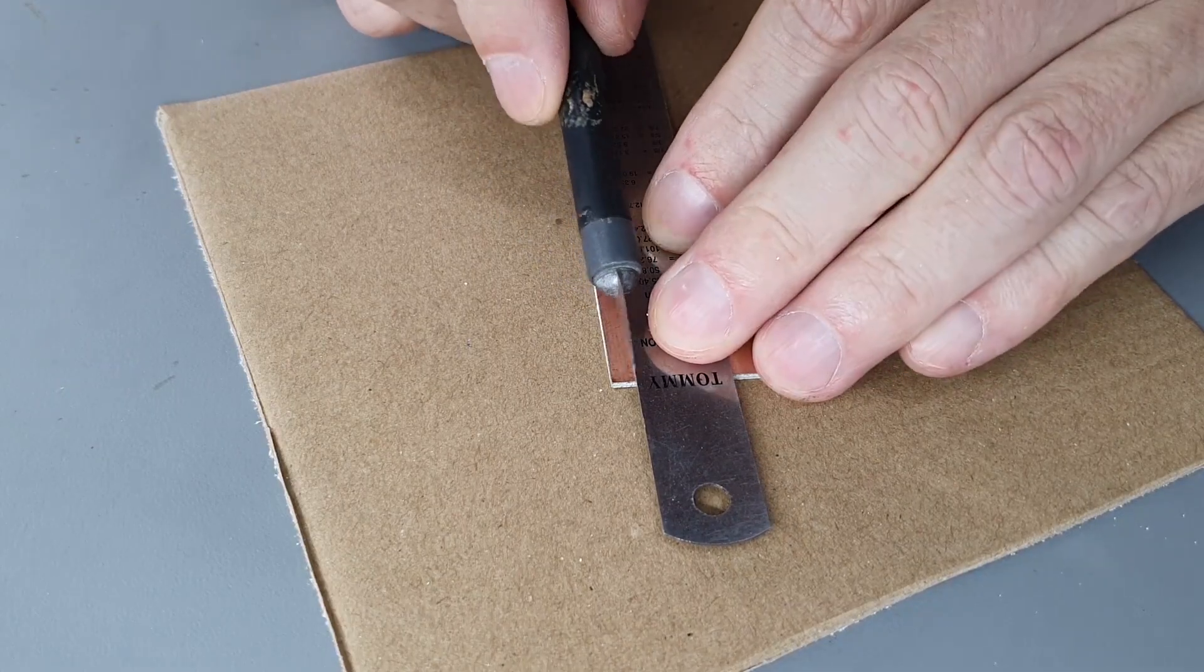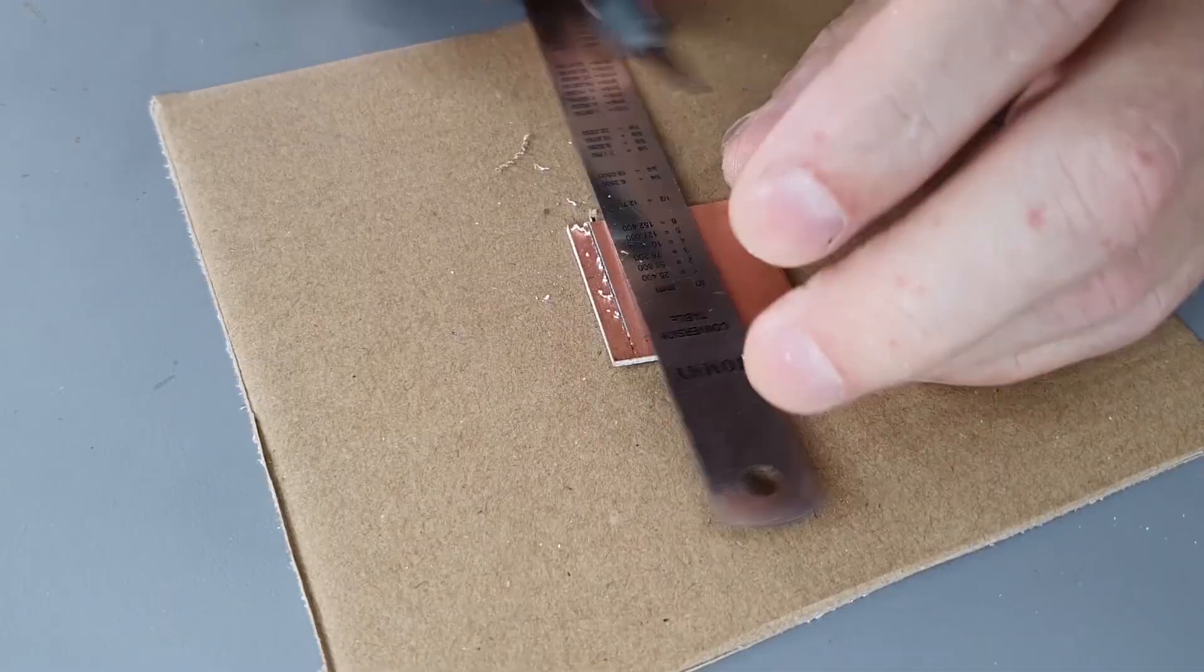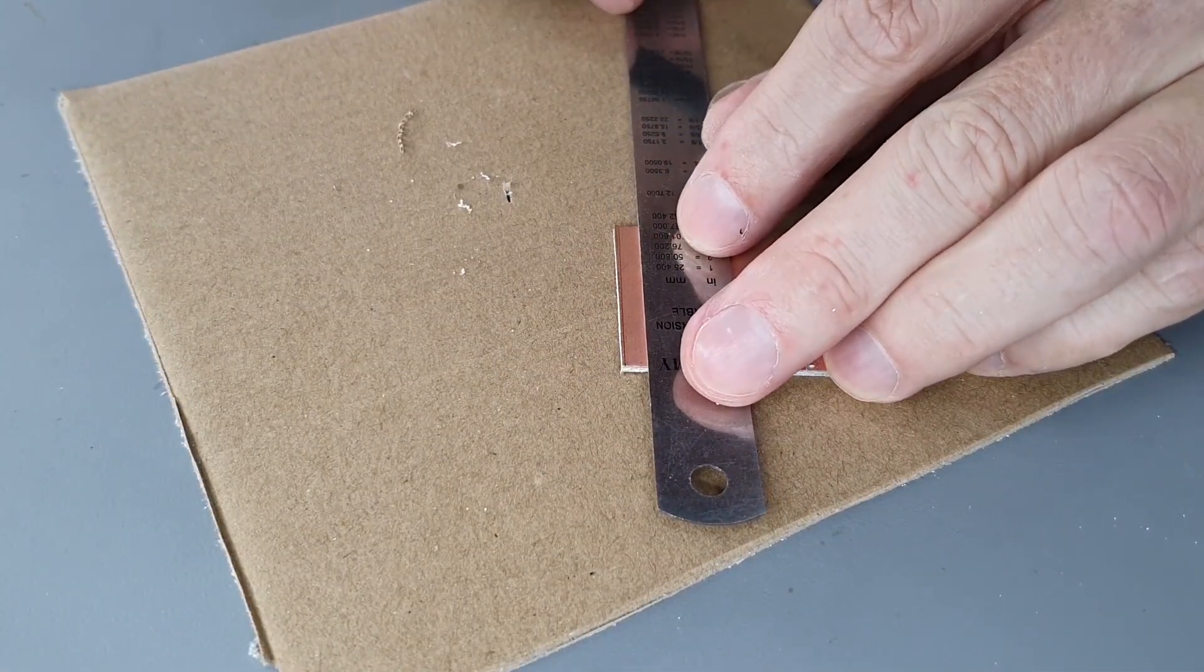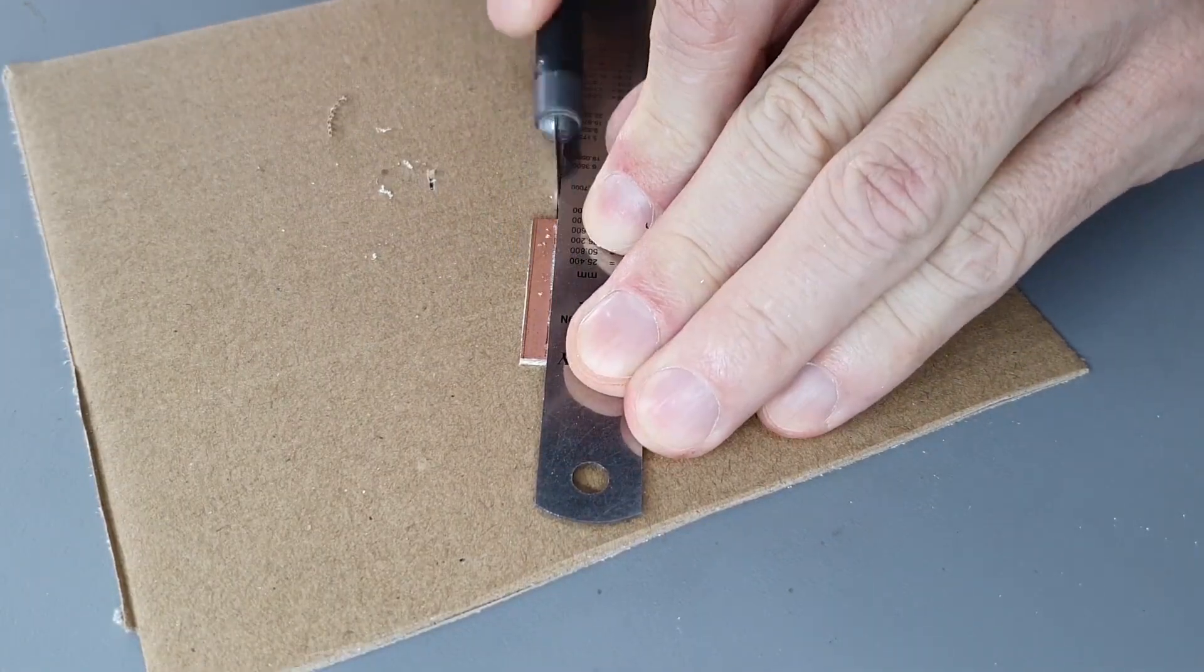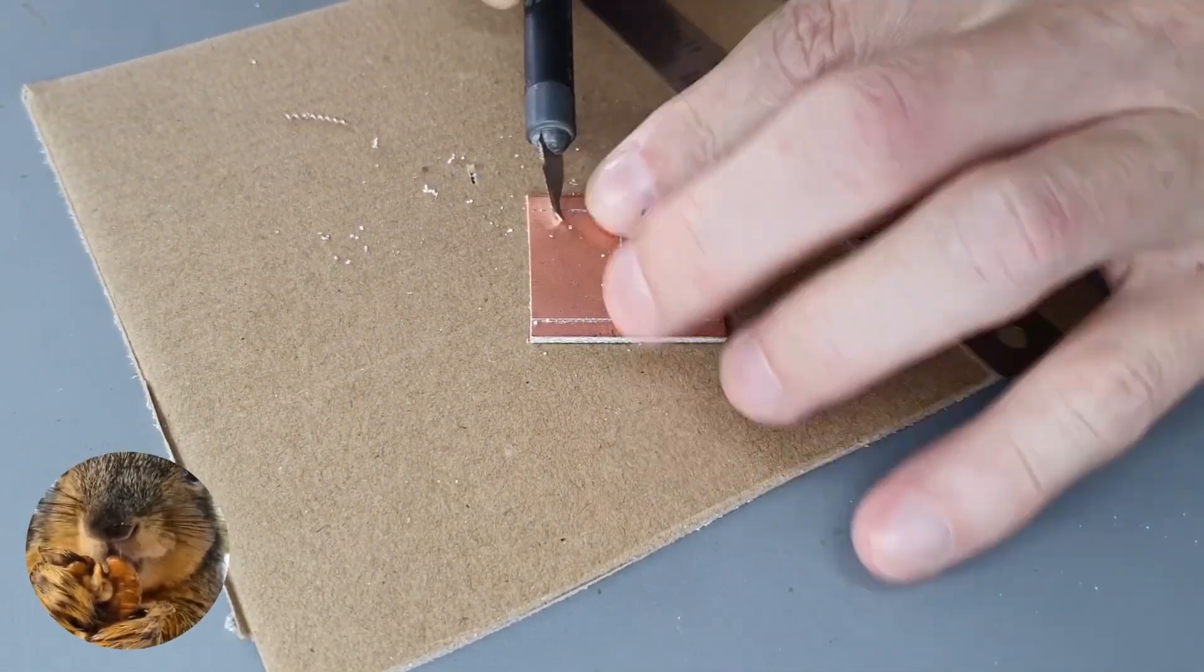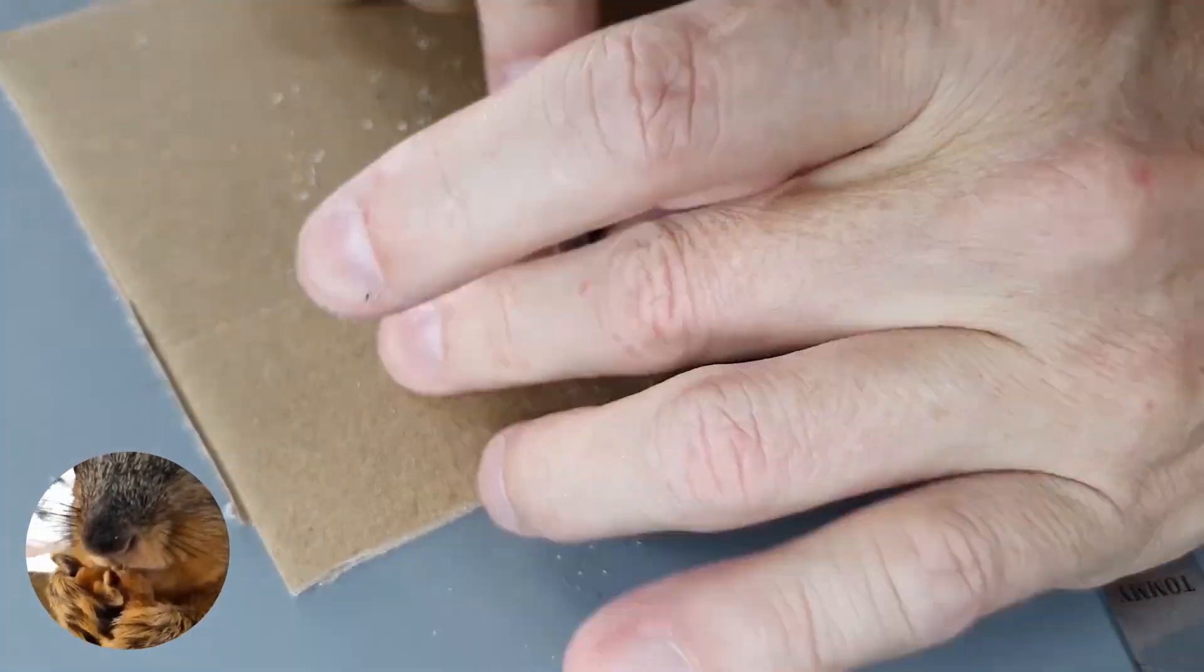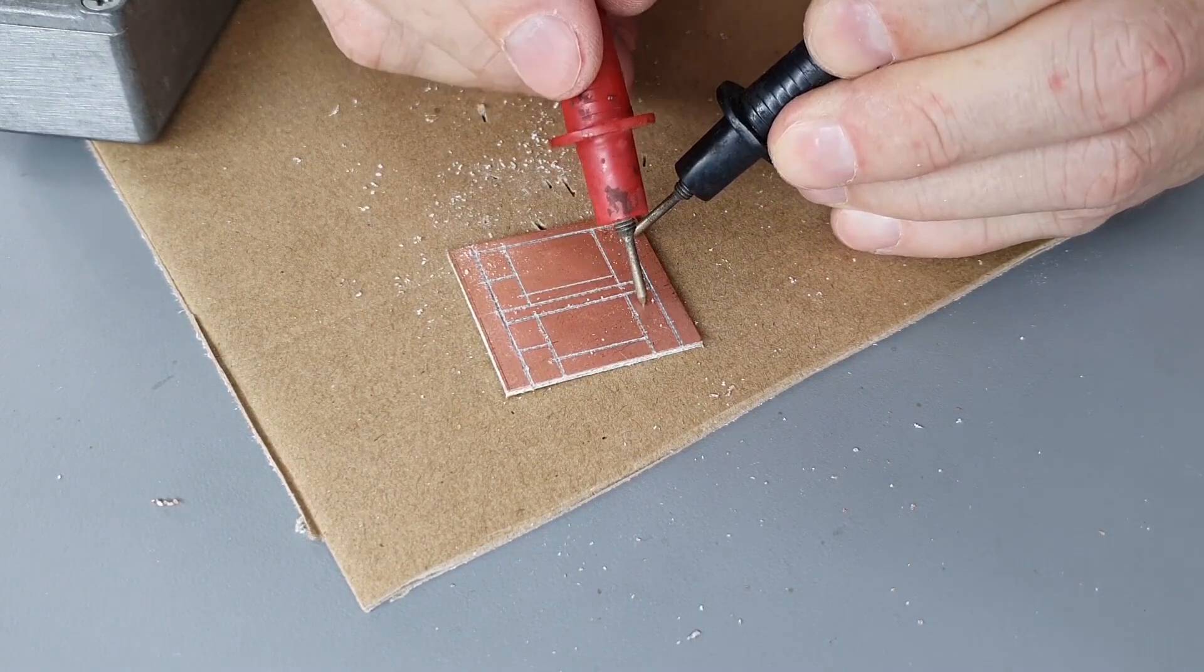Use your magic scratching tool to cut through the copper. Be sure to completely isolate each island. Use a constant gentle pressure. Increase the pressure if it's not cutting all the way through the copper. Use your continuity tester to check that there are no shorts before you move on.